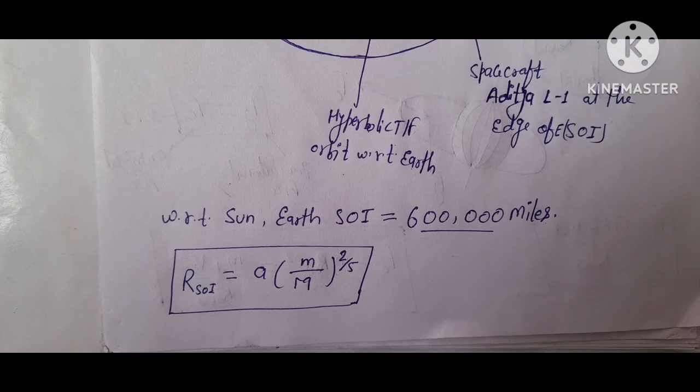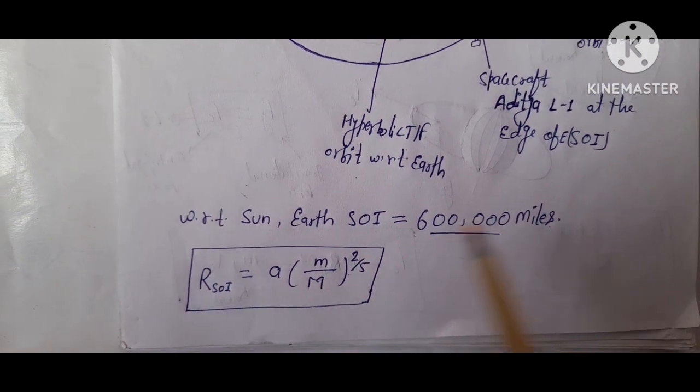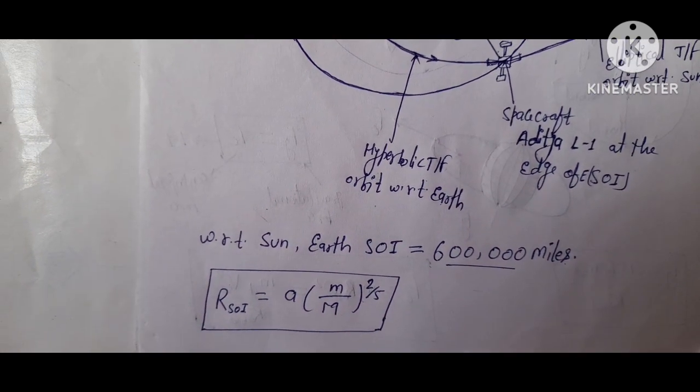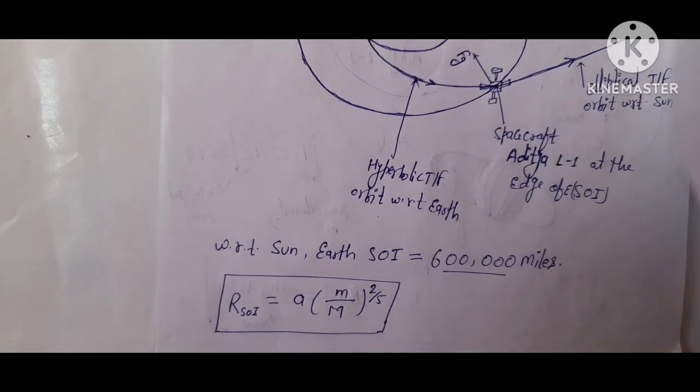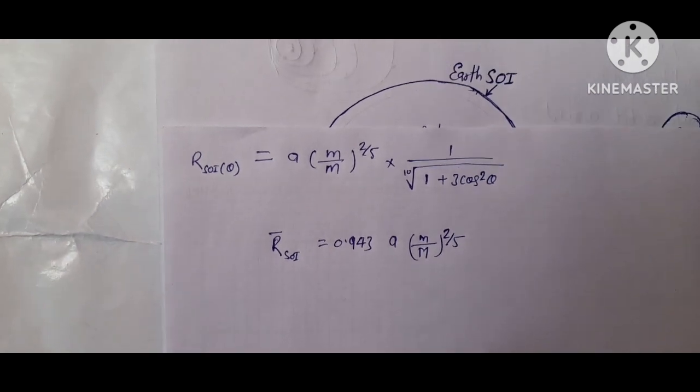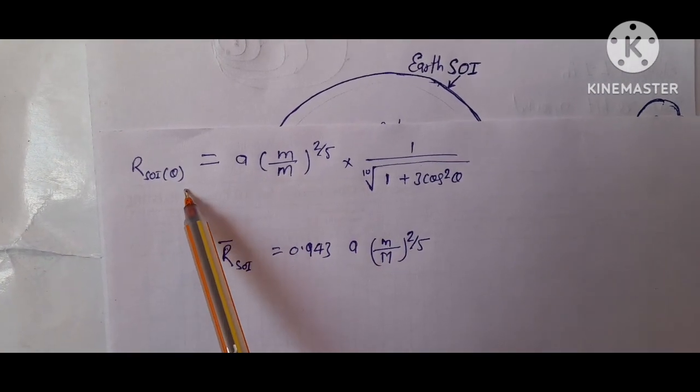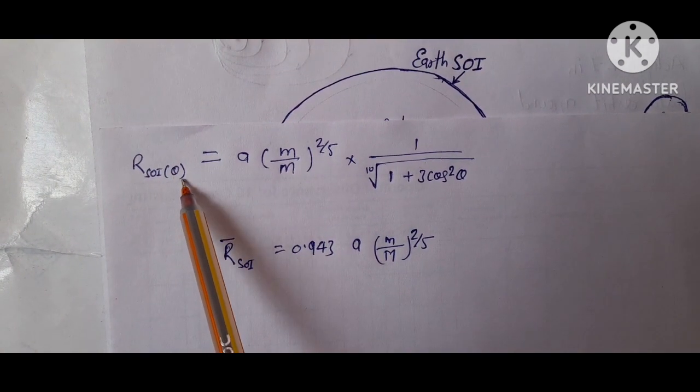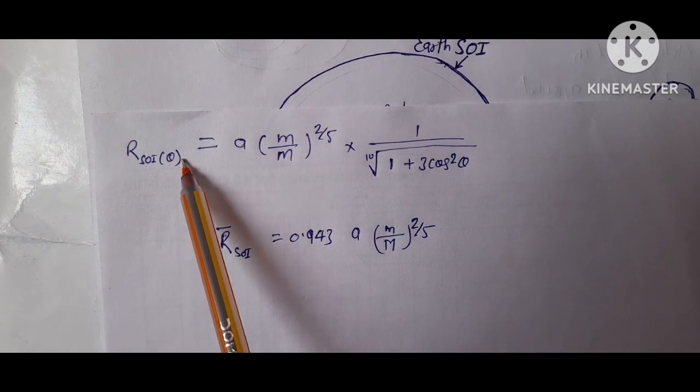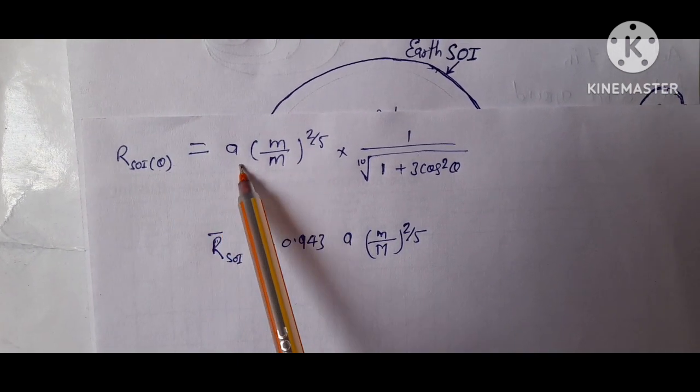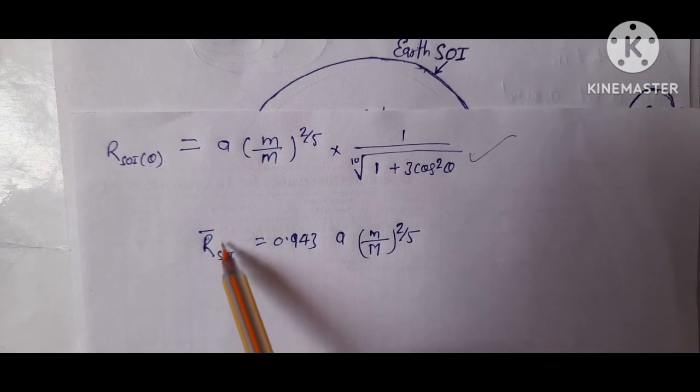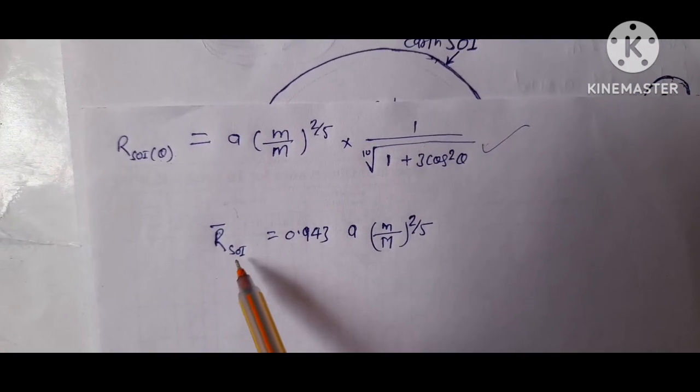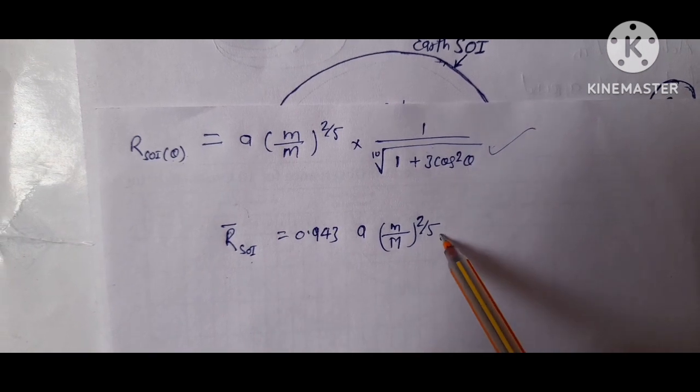Friends, if you want to make this formula more accurate, the distance depends on the angular distance theta. Then it will be more accurate because distance depends on the angular distance theta, and after averaging the radius of SOI, it will come out to this formula.